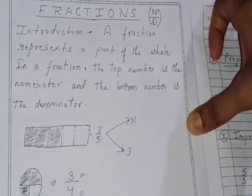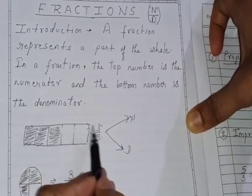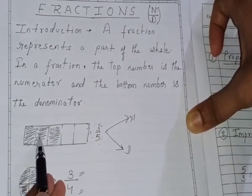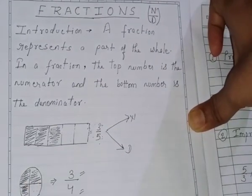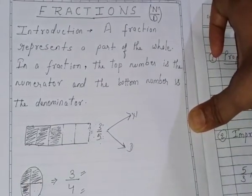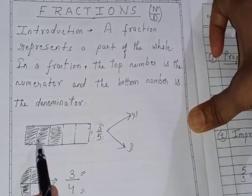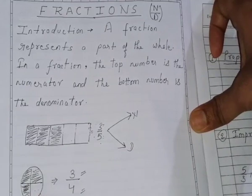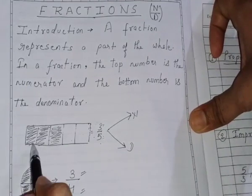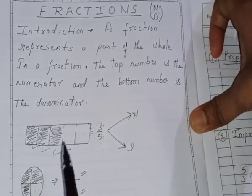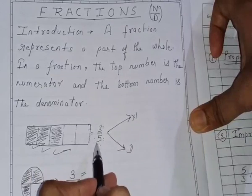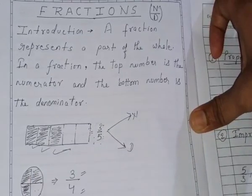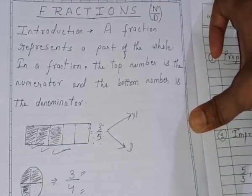For example, if there are blocks 1, 2, 3, 4, 5 — there are 5 blocks. Out of 5 blocks, 3 blocks are shaded, like this 1, 2, and 3. It means the fraction of the shaded portion is 3 by 5. So, this is the fraction.